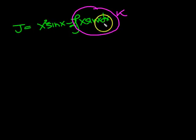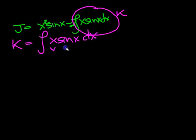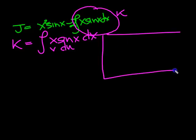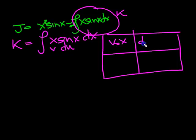So let's do that one then. So k is equal to that. So we've got k equals the integral of x sine x dx. Let that be v, let that be du. Draw our grid. v is equal to x, du is sine x.